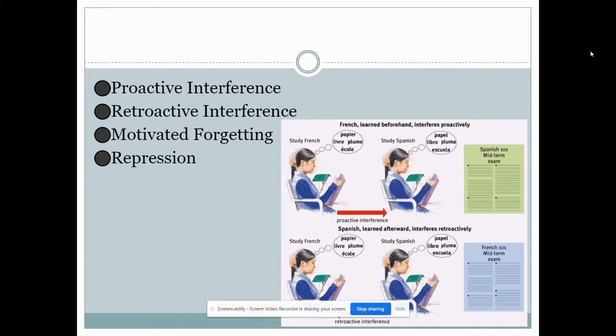Now these are easily mixed up and same with anterograde and retrograde amnesia and so here's a great way to remember it. With anything that is retro is old if you think about the term retro and so because of that retroactive interference is when old information is forgotten because it's being mixed up with newer ones and with retrograde amnesia it's old information is being forgotten before the amnesia inducing event.